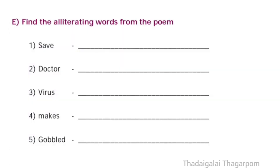Next, E, find the alliterating words from the poem. First one, save. The answer is store. Second one, doctor. The answer is double.